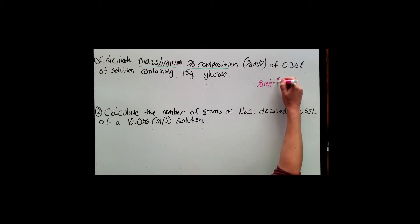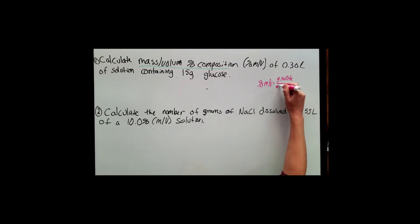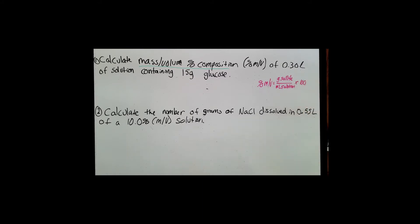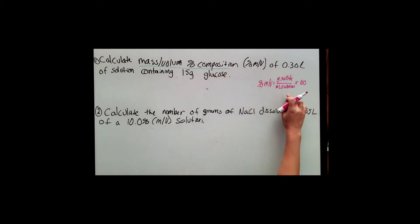The mass-volume percent equation is grams of solute over milliliters of solution, and then, since it's a percent, we need to multiply that by 100. So we need to plug in the values given into this equation to solve.